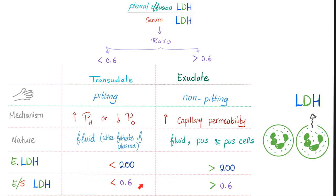Why does this ratio work? Transudate is simply an ultra-filtrate of plasma — clear fluid, low in cells. Exudate contains pus — neutrophils, which are cells. When these cells rupture inside the pleural effusion, they release LDH, raising its concentration. That's why LDH is high in exudates, both in absolute terms and relative to serum. Medicine makes so much sense once you understand what you're talking about.